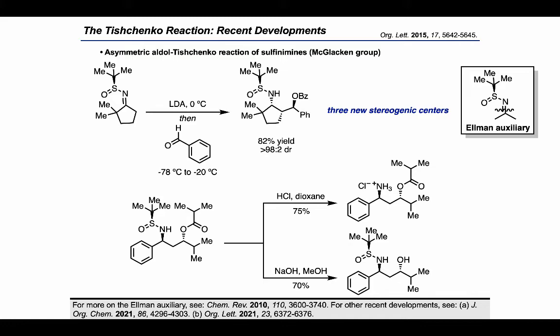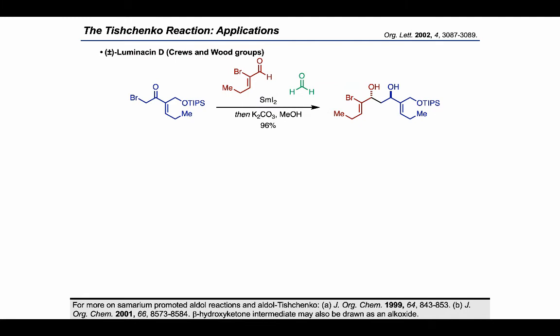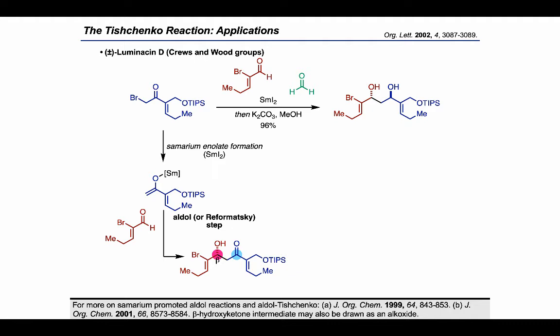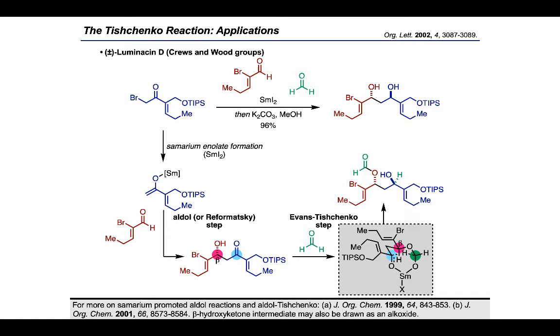Now I want to pivot and check out a few synthetic applications for this family of reactions. First, let's have a look at the synthesis of Luminous Nd by the Cruz and Wood groups. In this key step, the authors used an alpha-bromo ketone starting material in combination with an enal, as well as formaldehyde, to arrive at the diol product through the conditions shown. This overall process is proposed to proceed by initial samarium enolate formation using samarium diiodide, followed by an aldol or Reformatsky-type step using the enal as the electrophile. This forms a beta-hydroxy ketone, which could then be fed directly into an Evans-Tyshenko step using formaldehyde. In the bicyclic transition state, the hydride is delivered from the formaldehyde unit of the hemiacetal to the ketone of the beta-hydroxy ketone, marked with a blue circle, defining the relative stereochemistry of the 1,3-diol motif. The authors then carried out a methanolysis to reach the free diol, which was further elaborated to complete the synthesis of Luminous Nd.